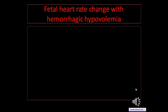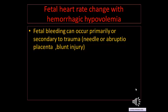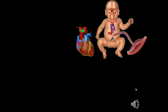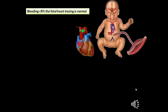There are many factors affecting the fetal heart rate. One of these factors is fetal hemorrhage, which leads to hypovolemia. Fetal bleeding can occur primary or secondary to trauma like needle approach, placenta, or blunt injury. If the fetal bleeding is less than 5%, the fetal heart rate tracing is normal. If bleeding is more than 5% and less than 20% and it is chronic, this allows compensatory mechanisms to develop and there will be no change in the fetal heart rate tracing.